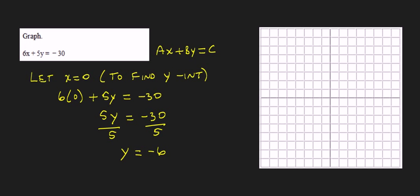So that means that the graph crosses the y-axis at negative 6. 1, 2, 3, 4, 5, 6, right there.